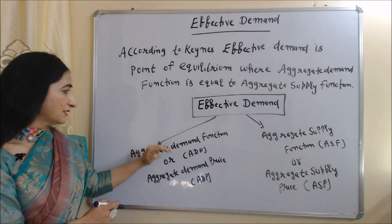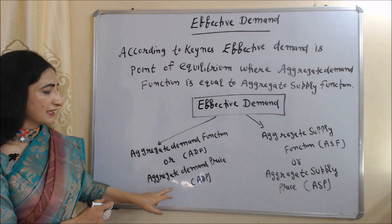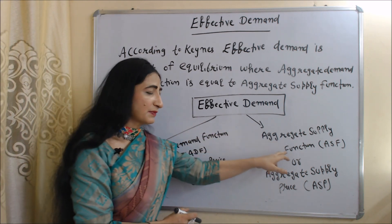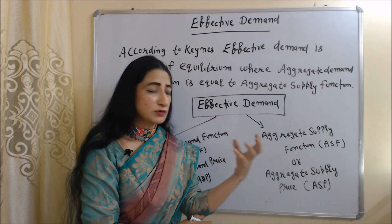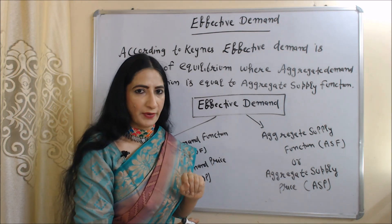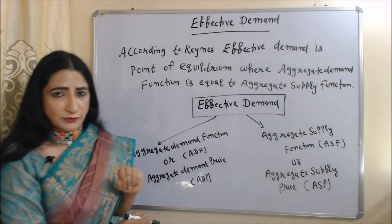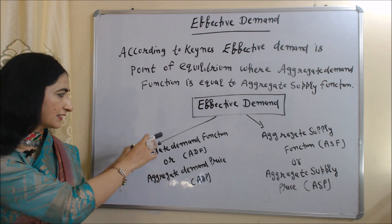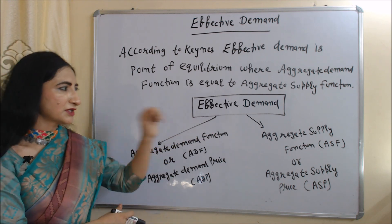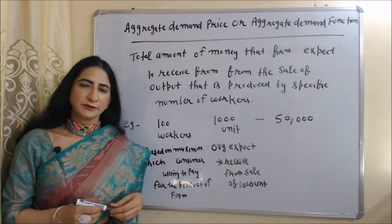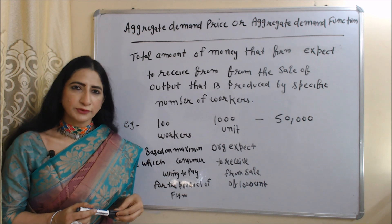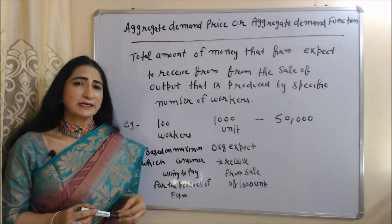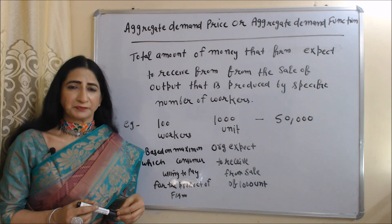The aggregate demand function is also known as aggregate demand price. The aggregate supply function is also known as aggregate supply price. Now one by one we will see what is the aggregate demand function and what is the aggregate supply function, starting with aggregate demand price.